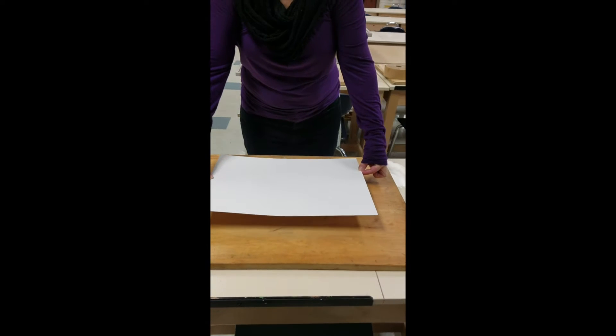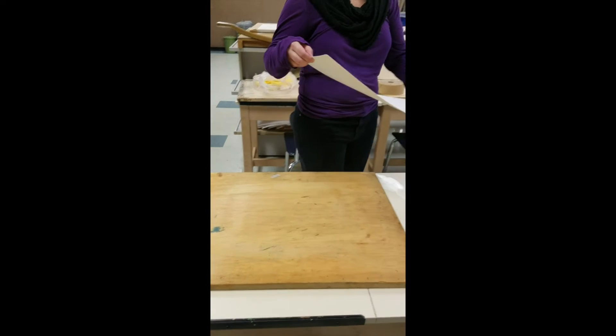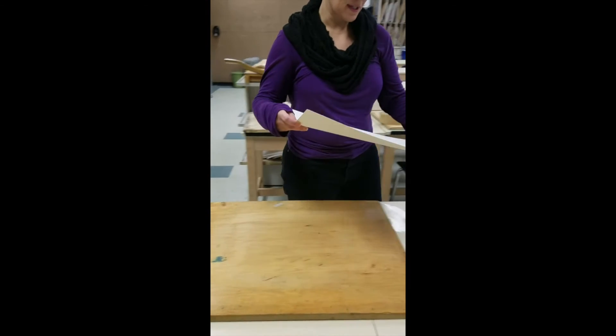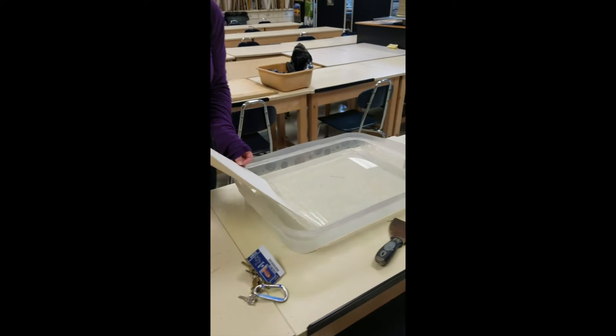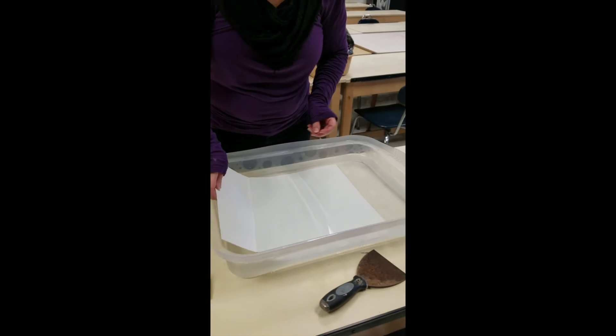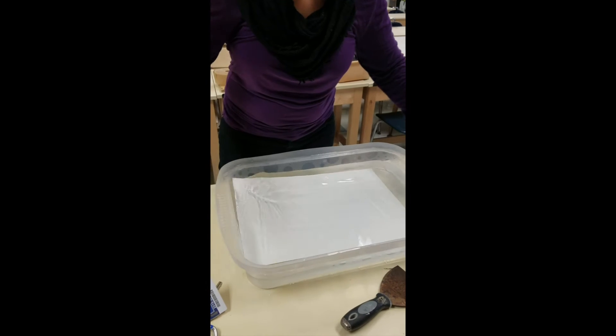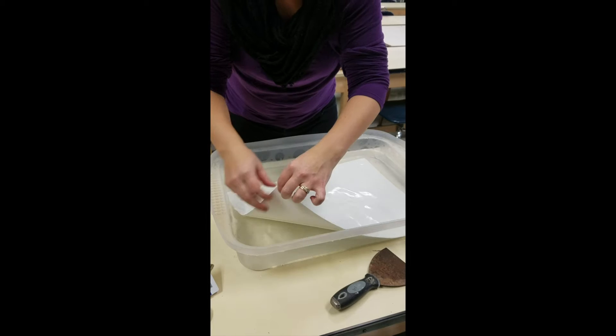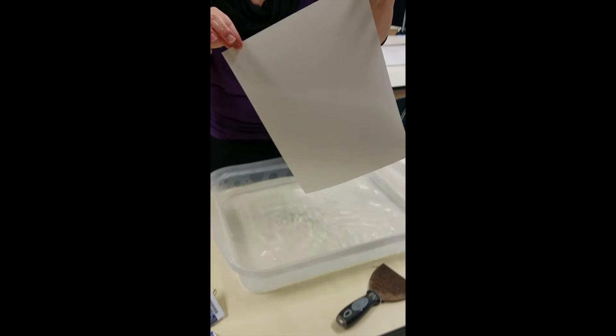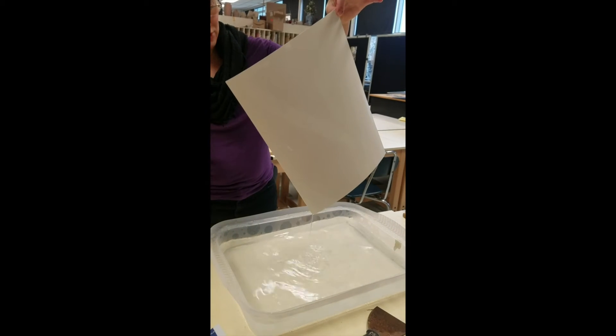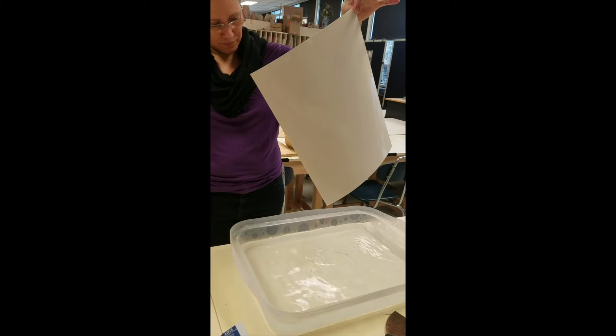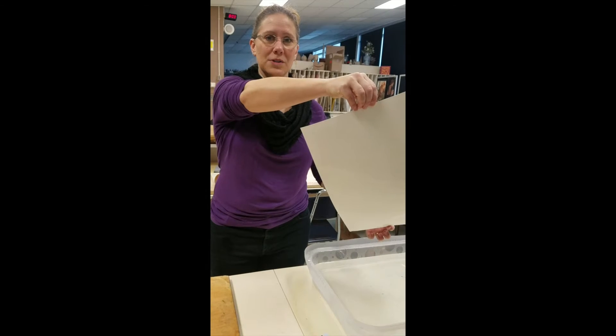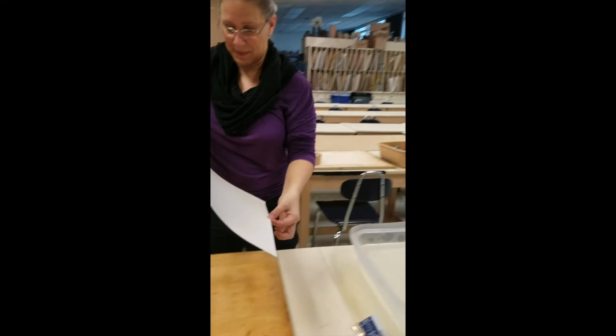What I'm going to do first is take my piece of paper and slide it gently into my bin of water to get the whole thing wet. I only need to let it sit in there about 30 seconds. Then I'm going to pick it up very gently and let the water drip off of it.